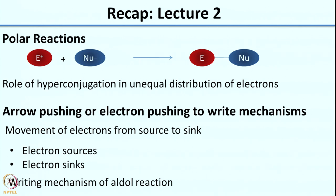We also looked at writing mechanisms by arrow pushing or electron pushing — how to move electrons from electron sources to electron sinks. I gave examples of different types of electron sources and electron sinks, and we stopped by writing the mechanism for the aldol reaction. Before stopping I had asked you to work out two problems.